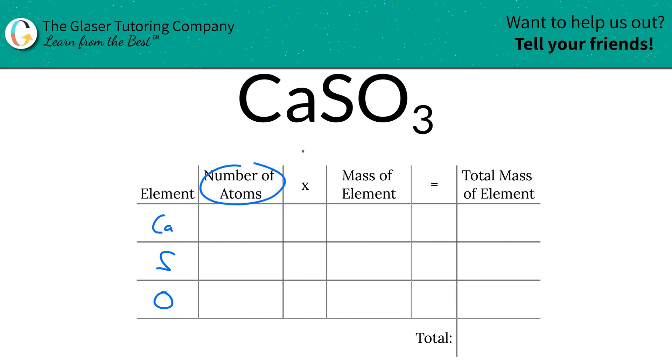The next thing is to write down the number of atoms of each, and that's where the subscripts come into play. So the subscript of calcium is a 1, right? Even if there's nothing there, that does not mean it's a 0. It is a 1. Same thing for sulfur. The subscript of sulfur is a 1 as well, and then the subscript for oxygen is a 3, so we have three oxygens.